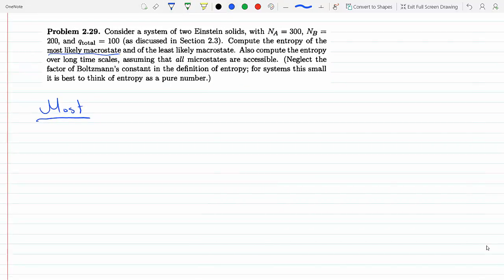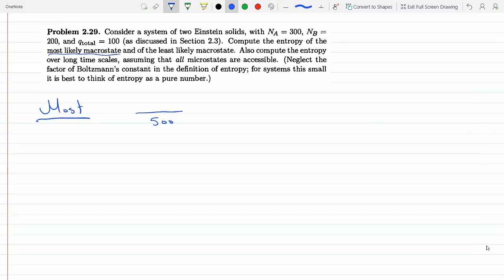So we have a total of 500, and A is 300, so 300 on A. If it's proportional this way, A will get 60. So QA will be 60 out of these hundred since they're not equal in number. If they're equal in number then each one will get half, but because one exceeds the other by a hundred, it's proportional this way. So QA will be 60, this is the most likely macrostate.